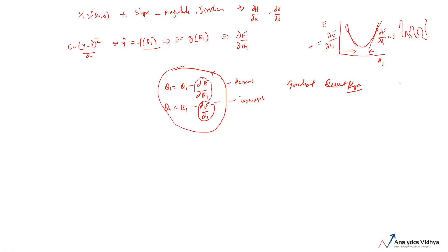For example, if ∂e/∂theta one equals three, it tells us the change in e is three units in a positive direction — that is the direction and magnitude discussed earlier. We can also modulate the magnitude by introducing a variable eta, commonly called the learning rate. The magnitude of ∂e/∂theta one determines the size of the step needed to reach the bottom: if it's large we take a larger step, if it's small we take a smaller step. We modulate this by multiplying by the learning rate.